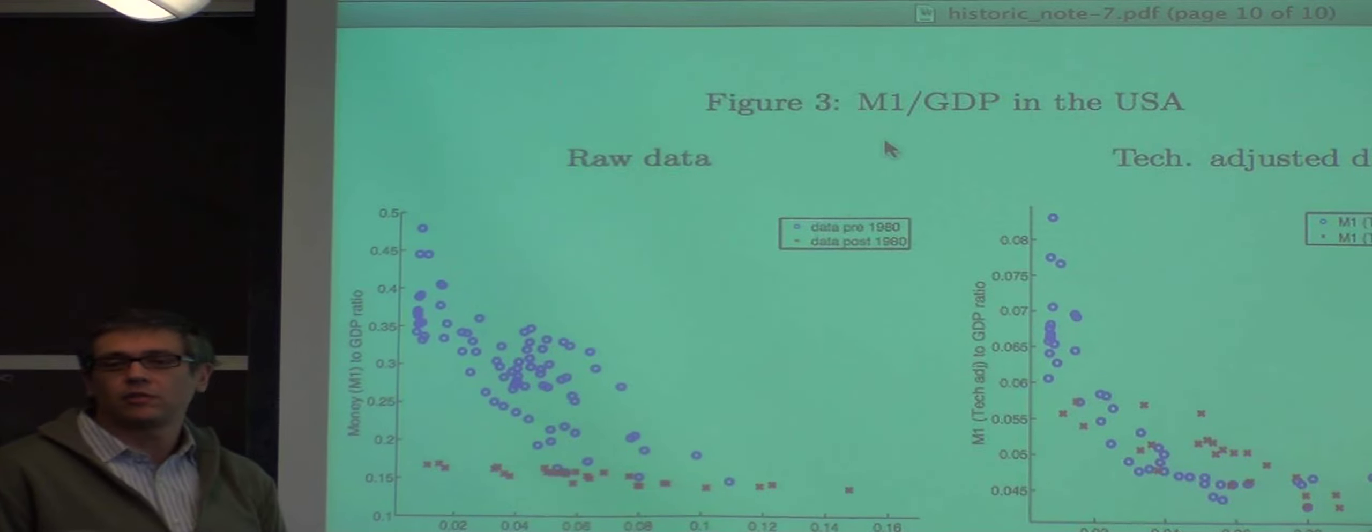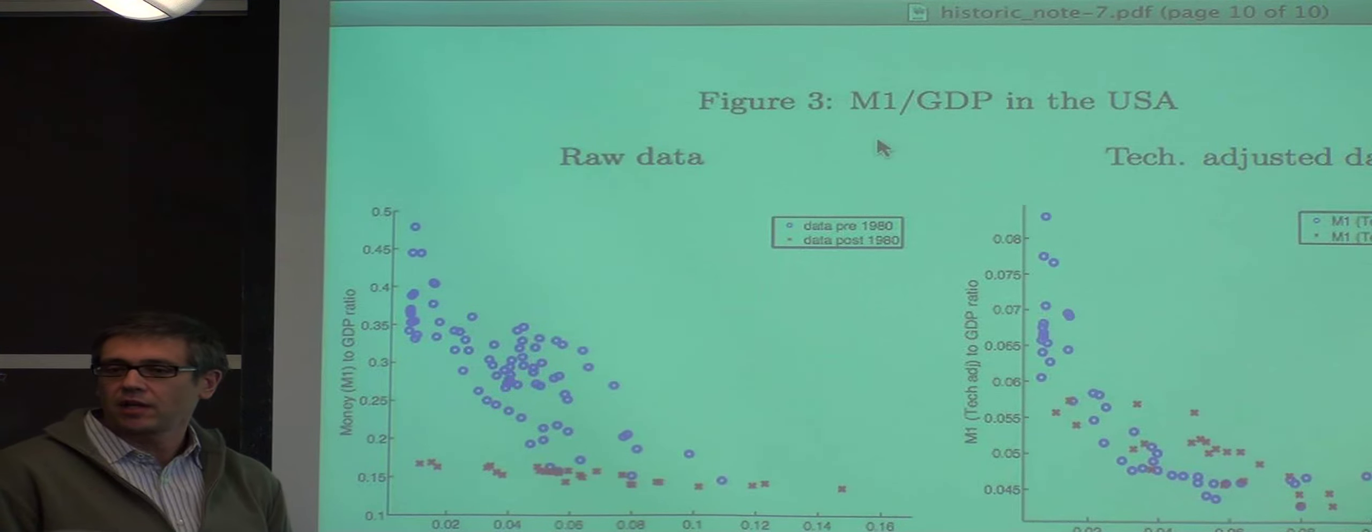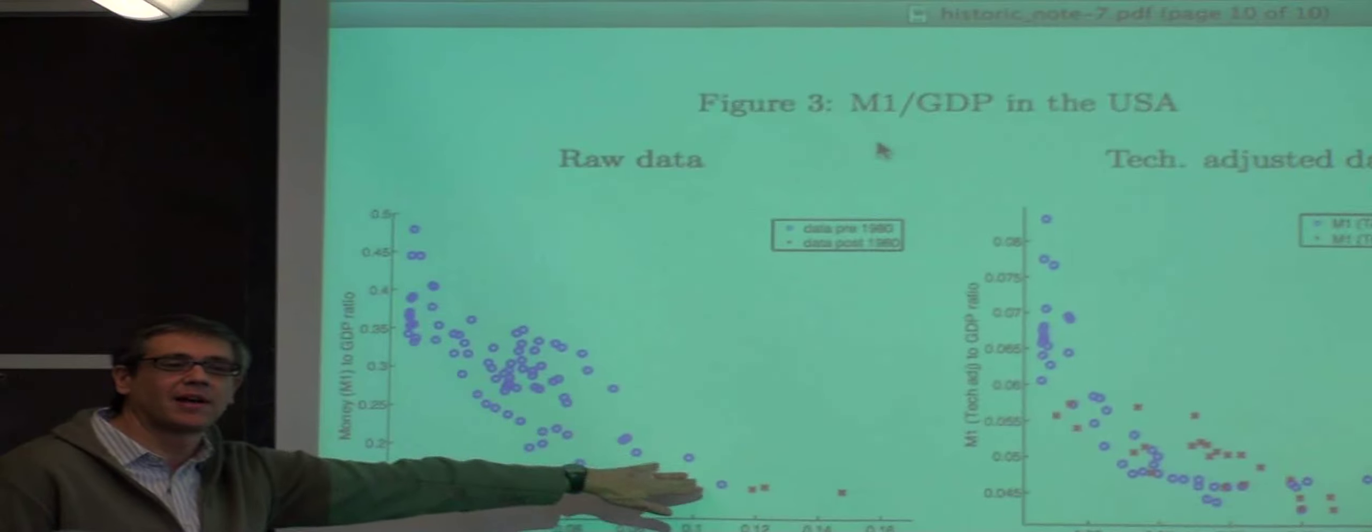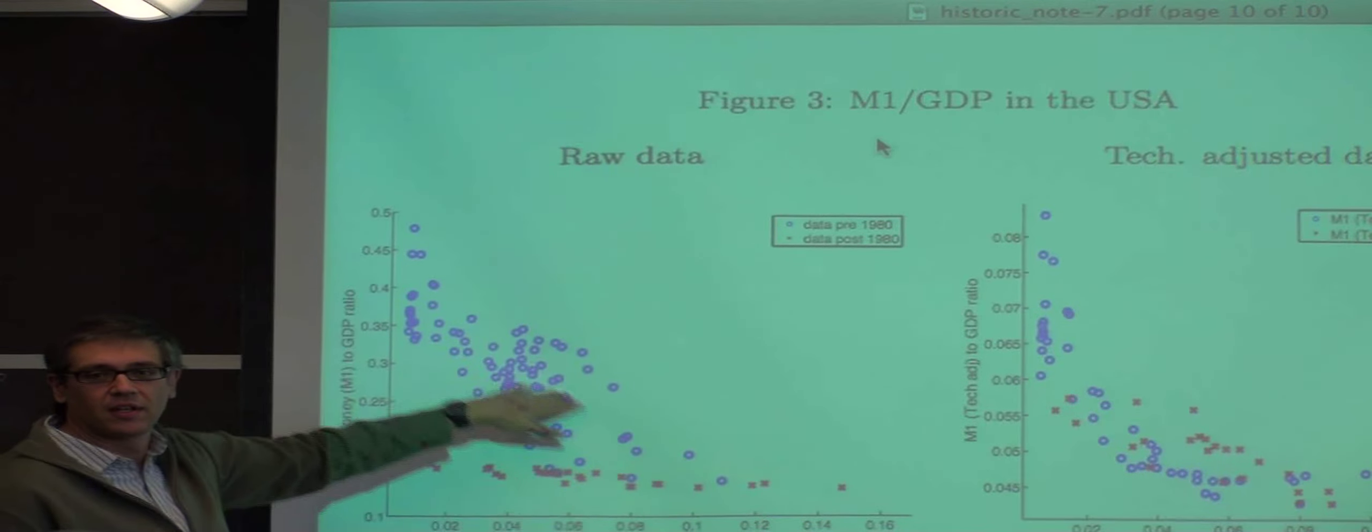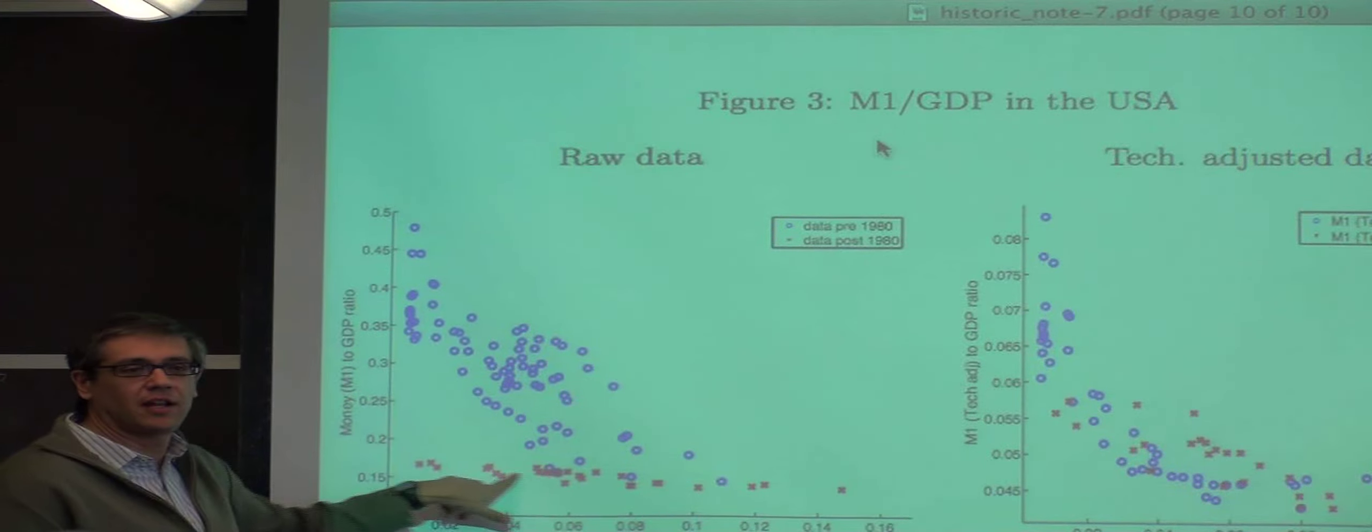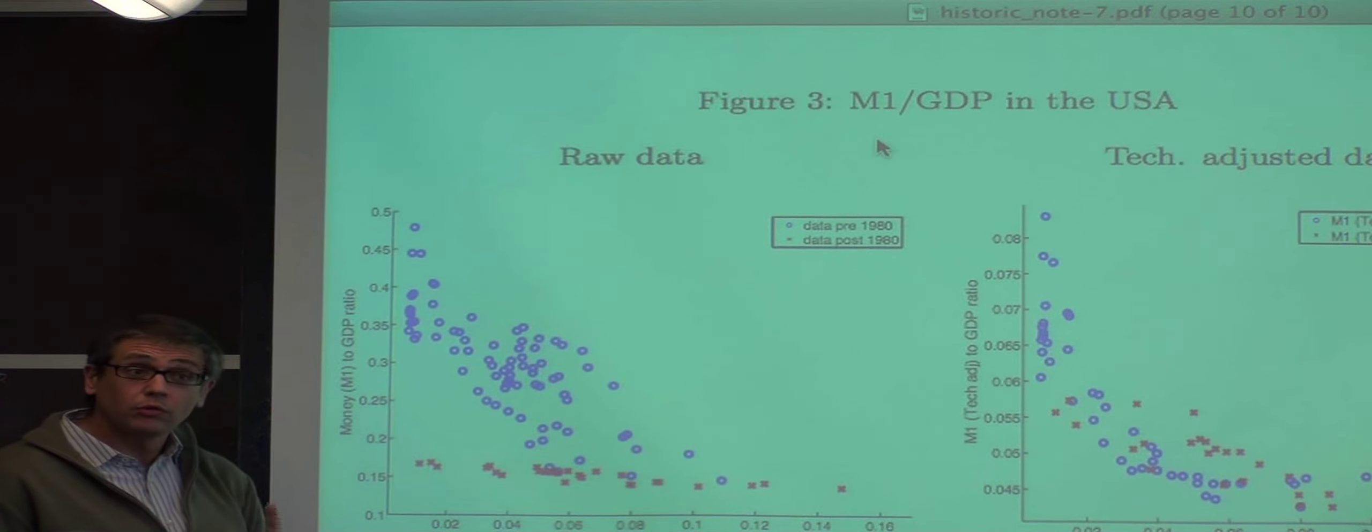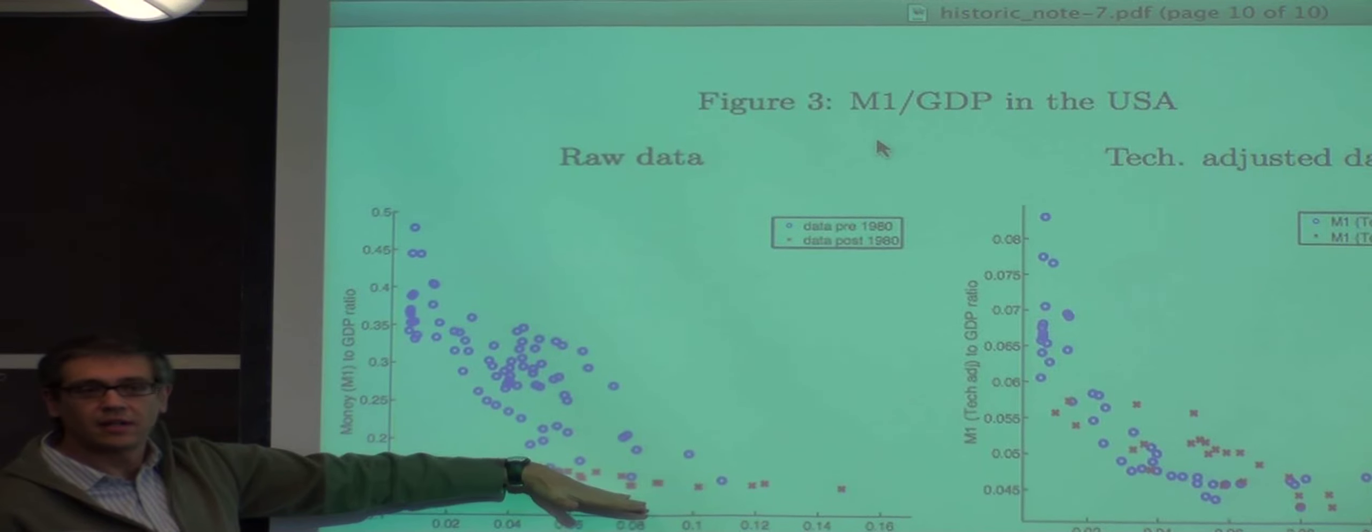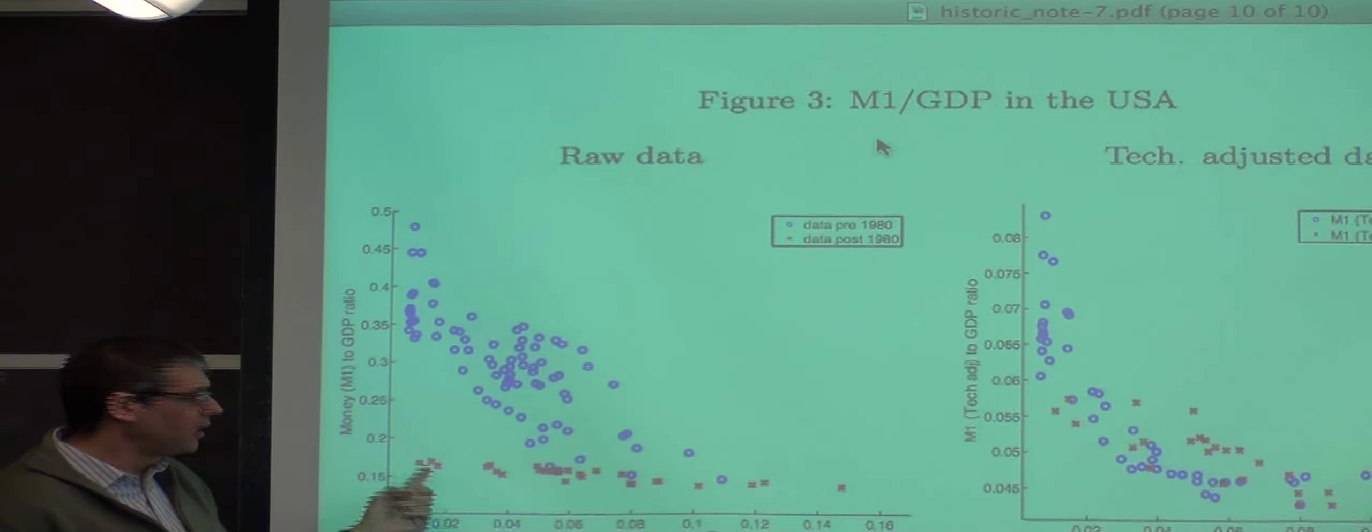Look at this one. This is M1 to GDP for the US. It's a long time series. Roughly speaking, the blue dots are the dots using the paper by Lucas in Econometrica, his presidential address on the stability of the money demand. It's a beautiful money demand with a slope of 1.5. This is the data after 1980. So what do you see? You see two things. It's lower, and it's flatter.